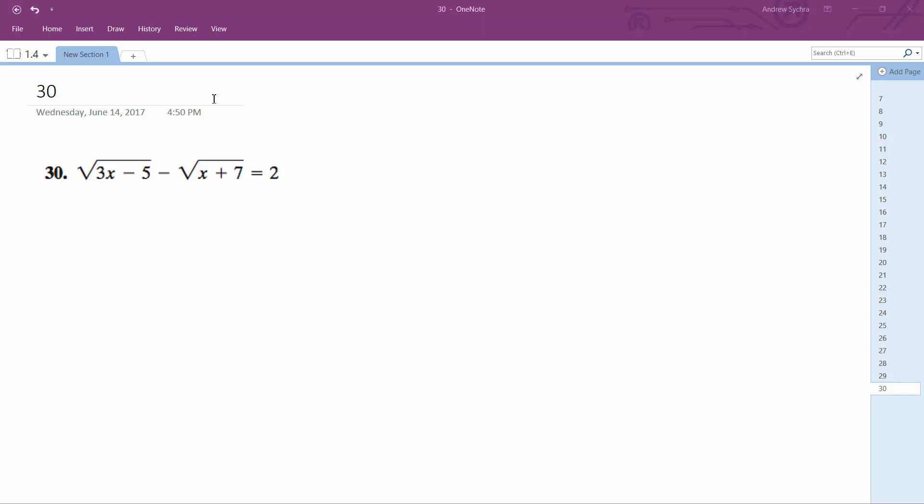I'm going to solve this problem. Starting off here, just moving the radical to the right side of the equation. So we're going to have 3x minus 5 is equal to 2 plus the square root of x plus 7.